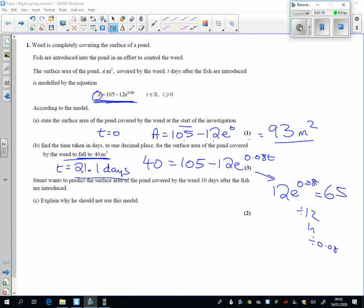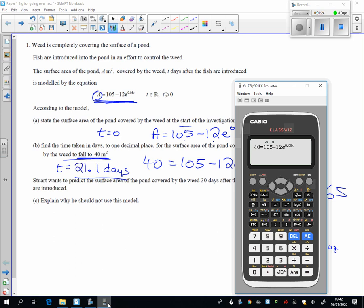Of course, you might be worried about your logs, so you bring up your calculator to check this, we can type the equation in like that, and of course we can just do a shift solve to see what happens, and it gives us very quickly 21.1, the same as we had there.